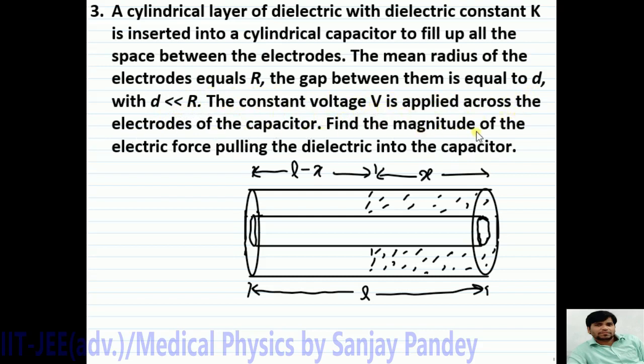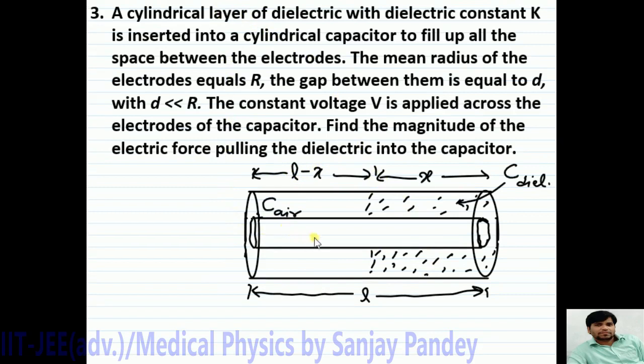Find the magnitude of the electric force pulling the dielectric into the capacitor. Suppose at any instant X length of the capacitor is filled with dielectric medium. So the whole system can be considered as a parallel combination of two cylindrical capacitors. One capacitor is C-air and other is C-dielectric. This portion is C-dielectric and this portion of capacitor is C-air.